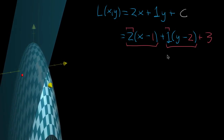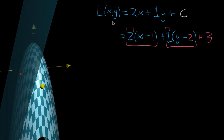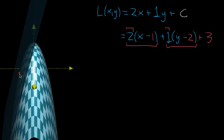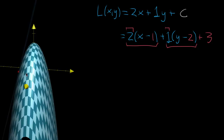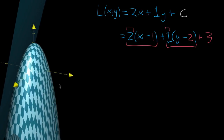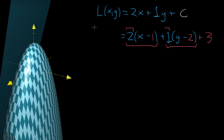In the last video I was talking about how you can define a function whose graph is a plane — a plane that passes through a specified point and whose orientation you can somehow specify. We ended up seeing how specifying that orientation comes down to certain partial derivative information. Let me repeat what the conclusion was, but in more abstract terms since I did it in a very specific example last time.